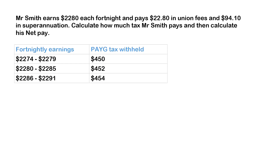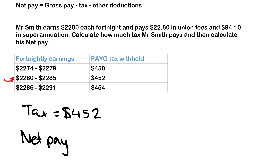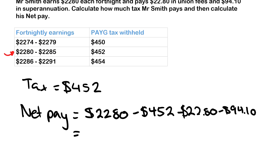Mr. Smith earns $2,280 each fortnight. He pays $22.80 in union fees and $94.10 in superannuation. We need to calculate how much tax he pays first, then his net pay. He fits into this bracket, so his tax is $452. His net pay is $2,280 minus $452 in tax, minus $22.80 in union fees, minus $94.10 in superannuation — giving him $1,711.10.